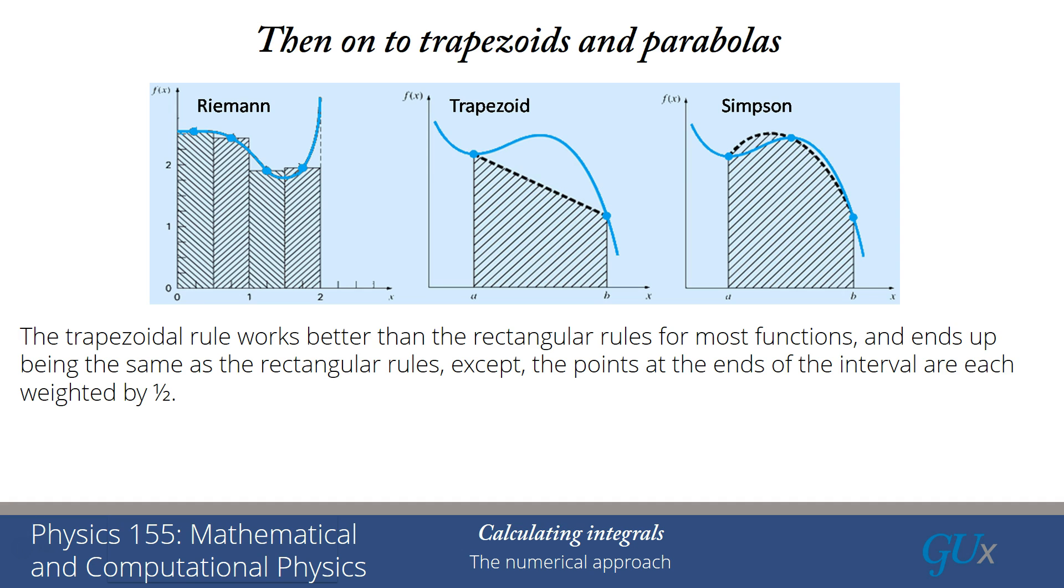Now, it turns out the area of a trapezoid is equal to the average of the height multiplied by the width of the rectangle. And for any point that's an inner point in that interval, I get the average for the trapezoid when the vertex is on the left-hand side and when the vertex is on the right-hand side. So all of those points add up together.